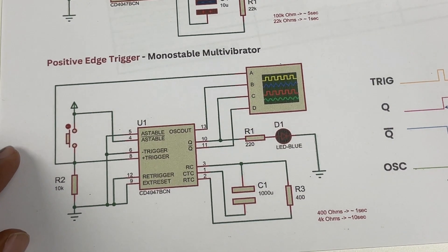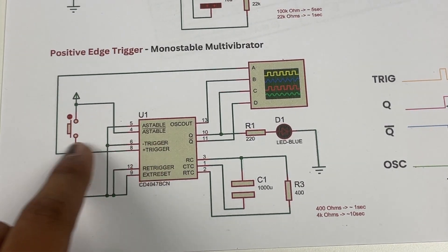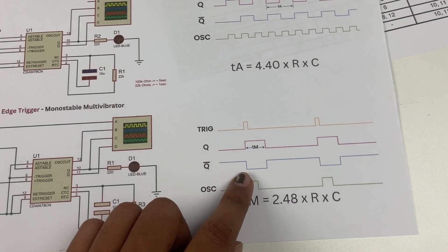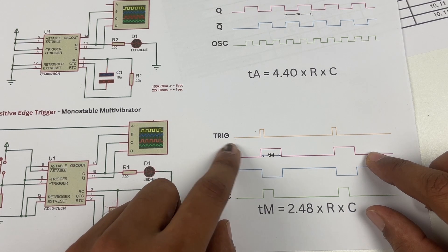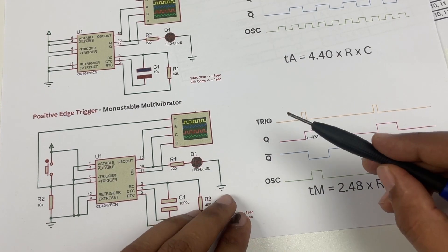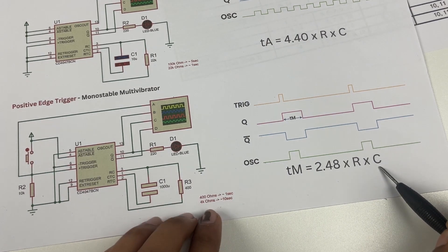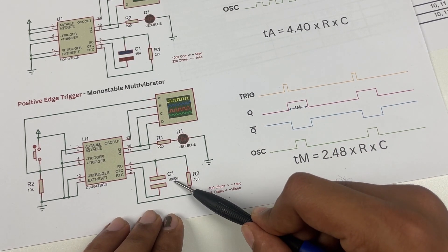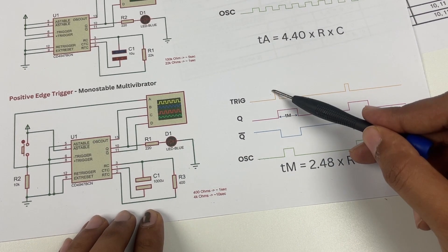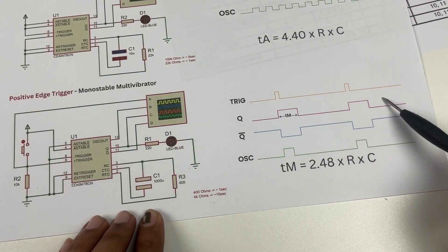Now let's go back to the monostable multivibrator circuit. In this circuit we have an input button as the trigger and an LED for output. Whenever this button is pressed, the output on Q will go high and remain on for a duration calculated by 2.48 × R × C. Q-latch gives an inverted output. The oscillator output syncs all inputs and outputs.